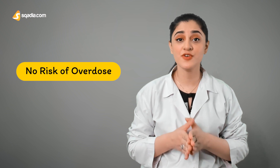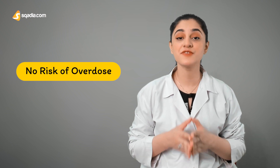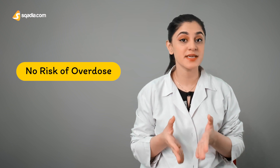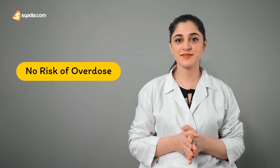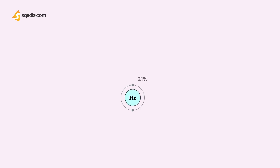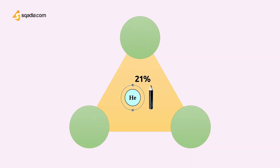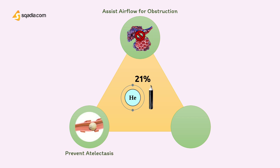Because the patient's level of consciousness governs their ability to maintain gas flow. Helium is used with at least 21% O2 to assist oxygen flow into the alveoli of patients with severe respiratory obstruction. It is also used to prevent atelectasis and in gas transfer lung function tests.